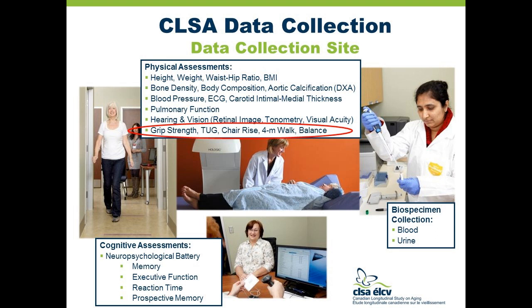At the data collection site, measures collected include physical assessments, anthropometric measures, bone density, body composition, blood pressure, ECG, carotid intima-medial thickness, pulmonary function, hearing, vision, grip strength, timed up-and-go, chair rise, 4-meter walk, and a balance test — the key ones in terms of falls. For those who provide consent, biological samples including blood and urine are also collected, along with an extensive cognitive assessment, which is important when thinking about falls and balance.